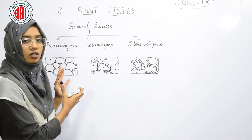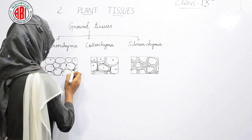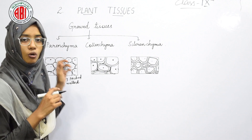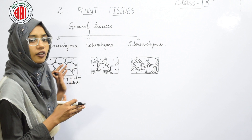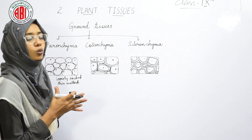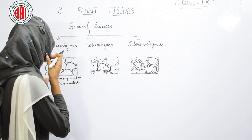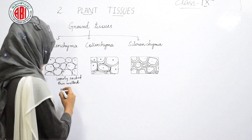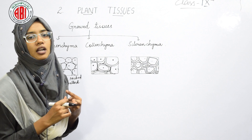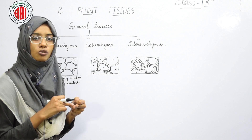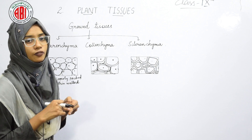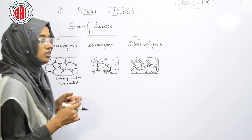When we see the structure of parenchyma tissues, the cells are loosely arranged and thin-walled. They show some intercellular spaces between them — they are loosely packed and show some air spaces in their structure. This parenchyma helps in carrying out photosynthesis and also helps in storing food material.